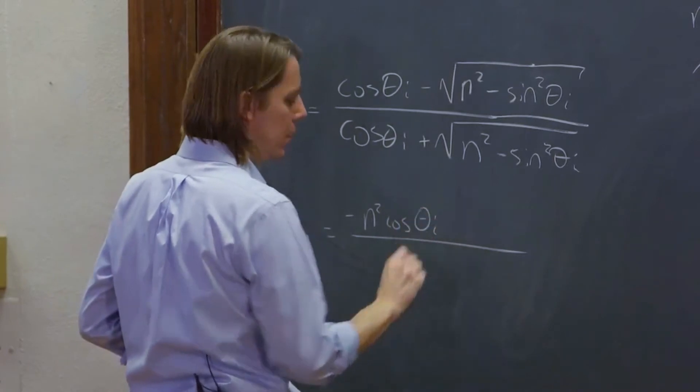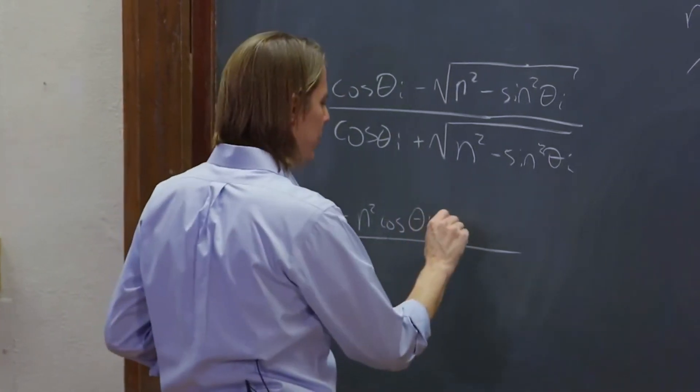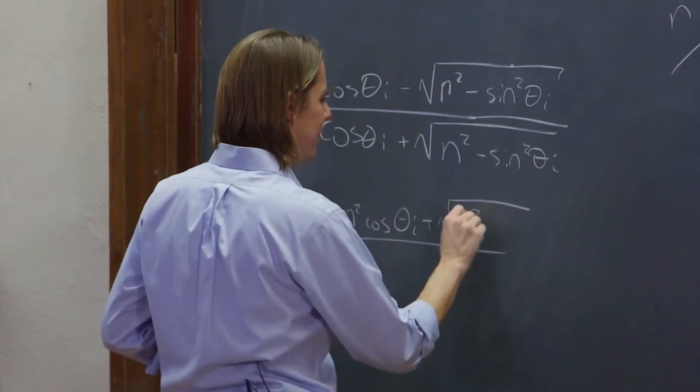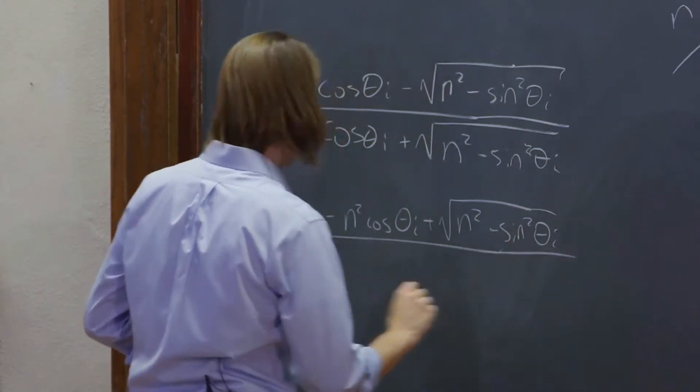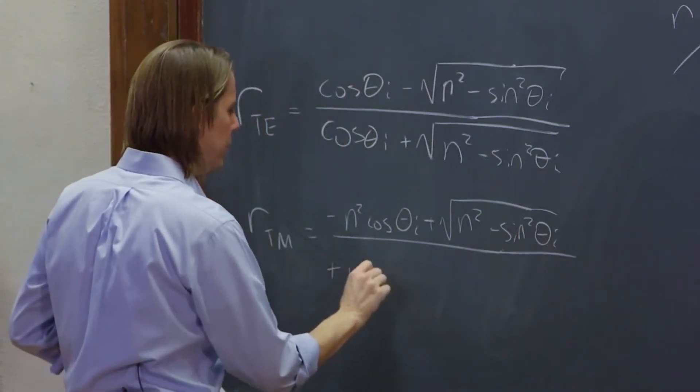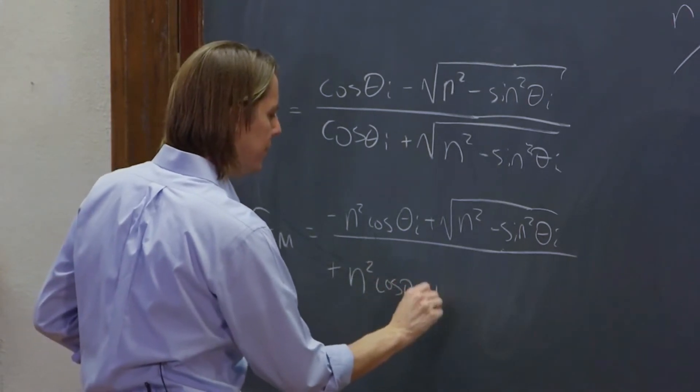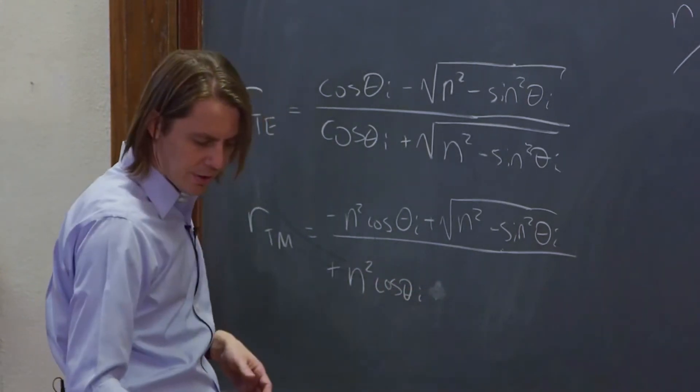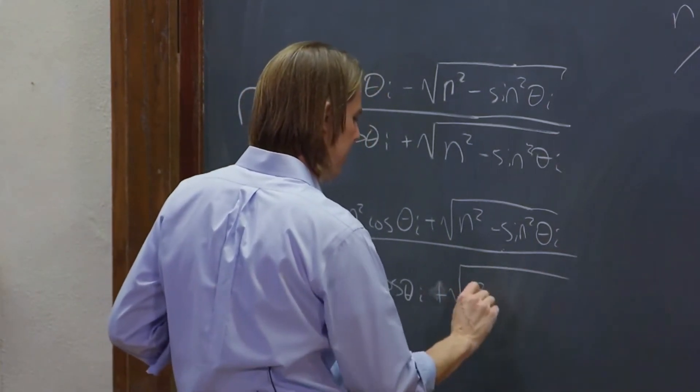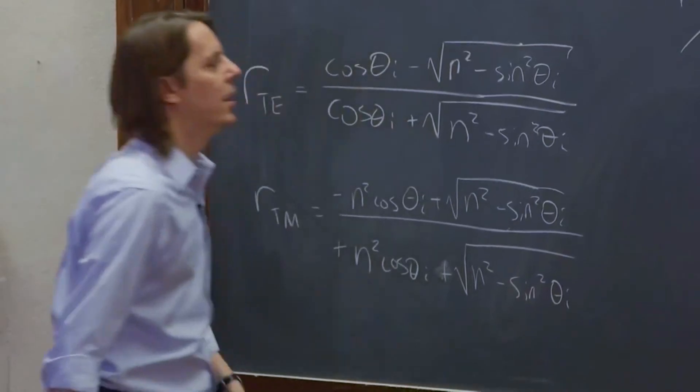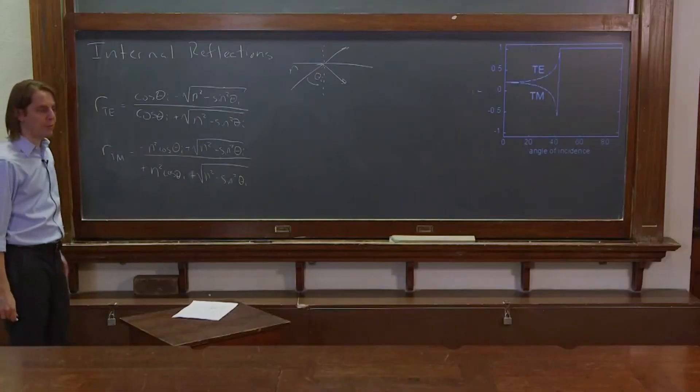And then RTM is n squared cosine theta i minus the square root of n squared minus sine squared theta i over n squared cosine theta i plus the square root of n squared minus sine squared theta i. Okay, that's what we determined before.